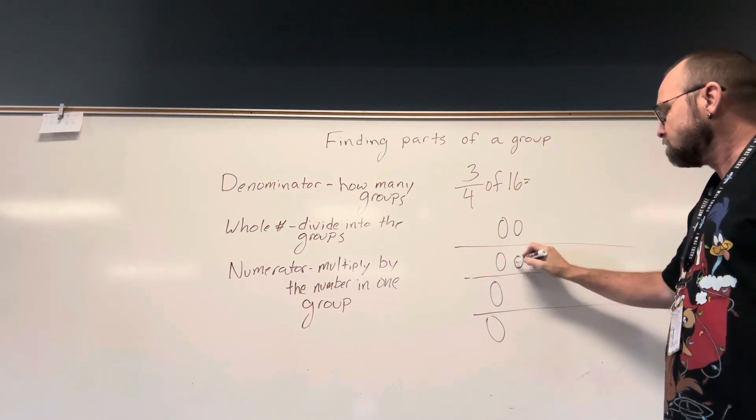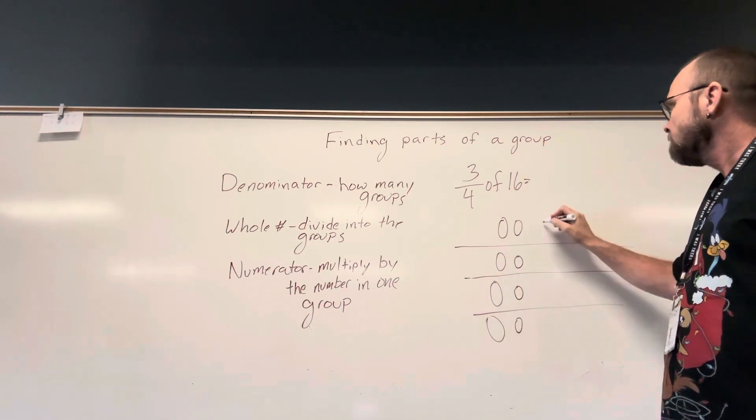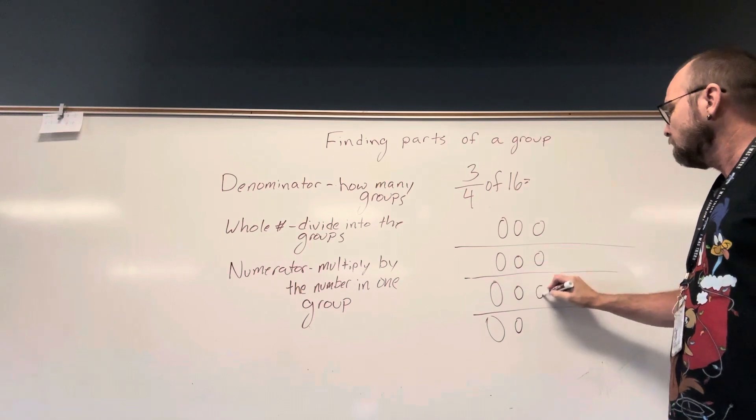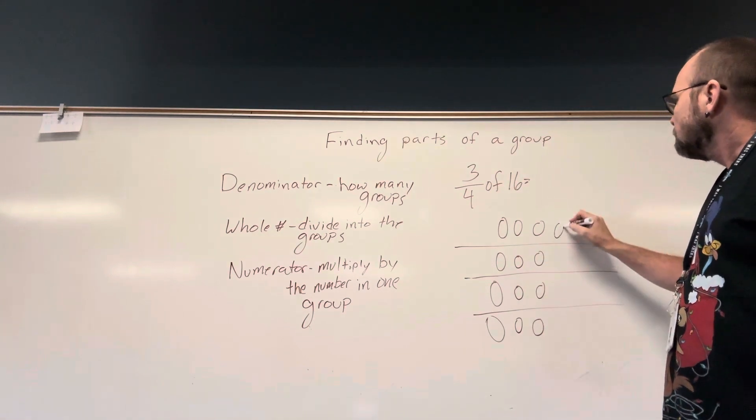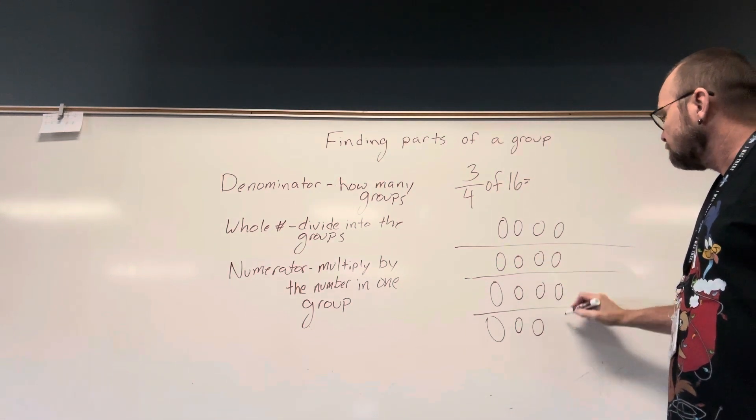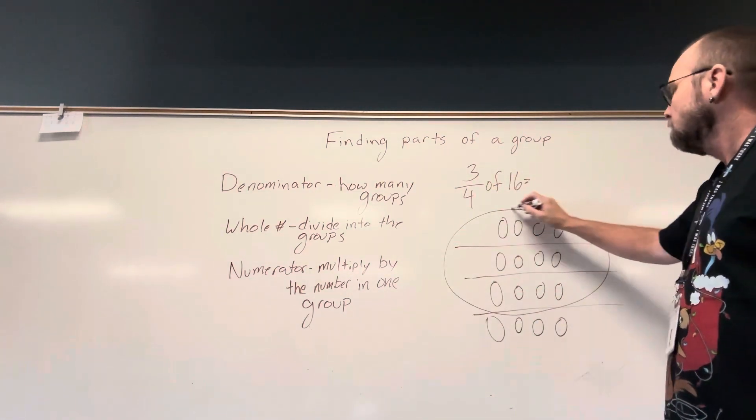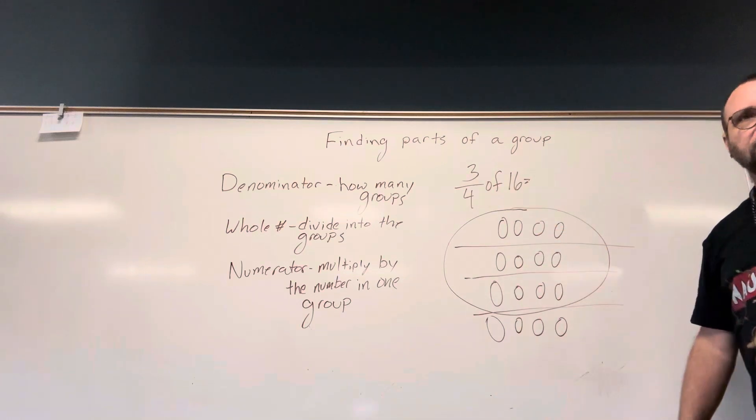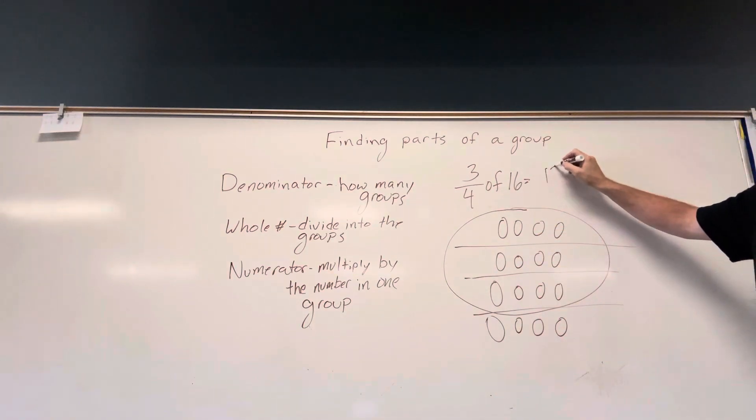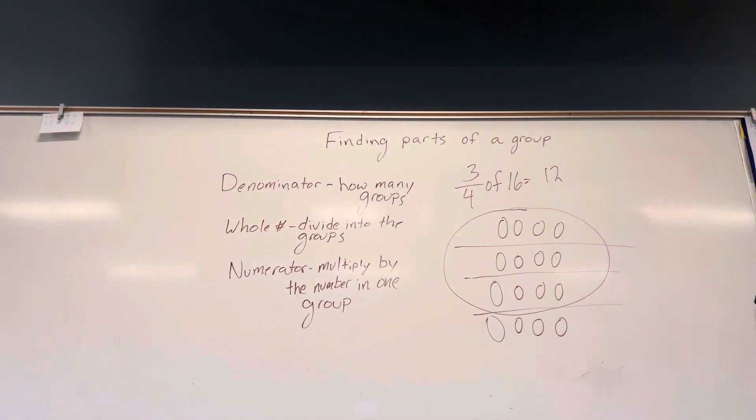So that's four, five, six, seven, eight, nine, ten, eleven, twelve, thirteen, fourteen, fifteen, sixteen. We're looking at three of the groups. So four times three is going to give me twelve.